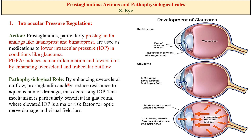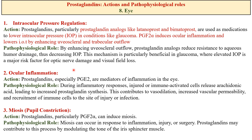By enhancing uveoscleral outflow, prostaglandin analogs reduce resistance to aqueous humor drainage, improving drainage and decreasing intraocular pressure — a mechanism particularly beneficial in glaucoma, where increased intraocular pressure is a major risk factor for optic nerve damage and visual field loss. Prostaglandins are also involved in the modulation of inflammatory responses in the eyes; particularly prostaglandin E2 is a mediator of ocular inflammation. During inflammatory responses, injured or activated immune cells release arachidonic acid from the cell membrane, forming prostaglandins that cause vasodilation and increase permeability of blood vessels.